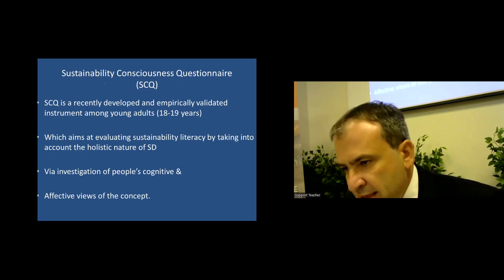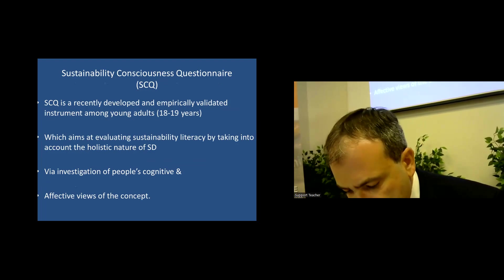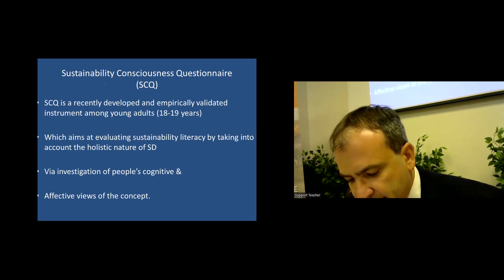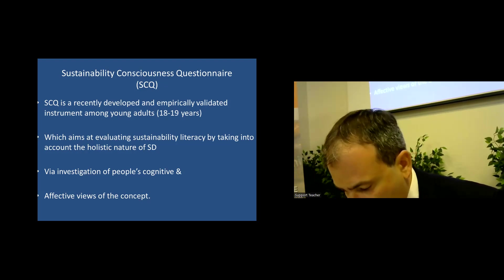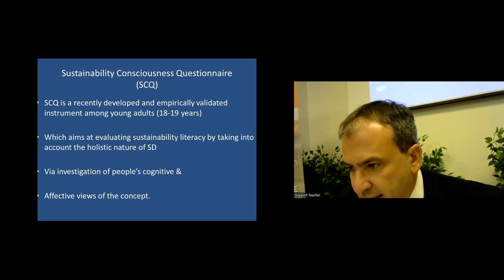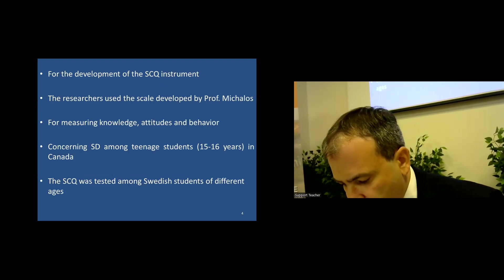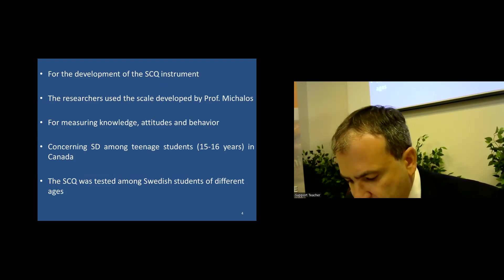What is the instrument that we use? It is the Sustainability Consciousness Questionnaire, which is a recently developed and empirically validated instrument that was first used among Swedish young adults at the age of 18 and 19 years old, which aims at evaluating sustainability literacy by taking into account the holistic nature of sustainability via investigation of people's cognitive and affective views of the concept. For the development of the questionnaire instrument, the researchers used the scale that was developed by Professor Michalos for measuring knowledge, attitudes and behaviour concerning sustainability among teenage students in Canada.